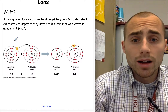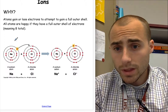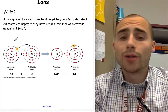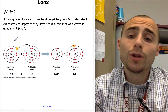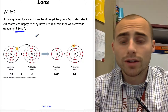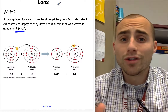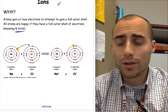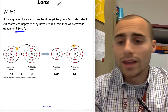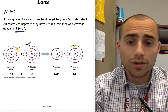Why do ions gain or lose electrons? Every single atom wants to have a full outer shell of electrons, and a full outer shell means eight total electrons on the outer shell. It's not so easy to get, because you have to fill the inner shells before you can move to the outer shell. The way atoms do this is they give away or gain extra electrons.